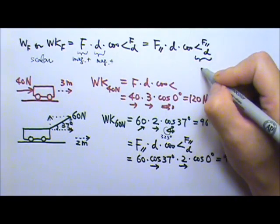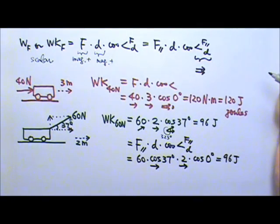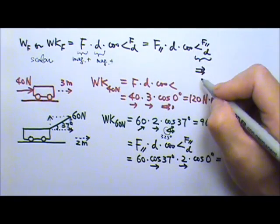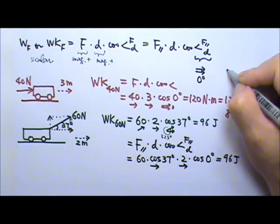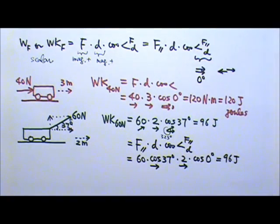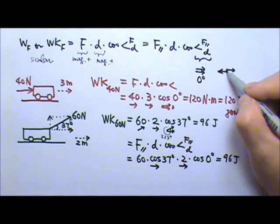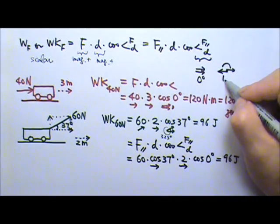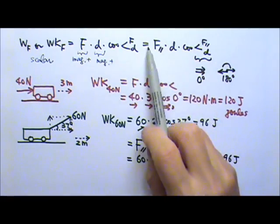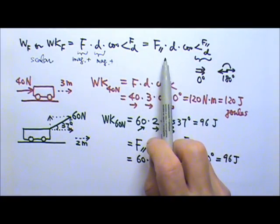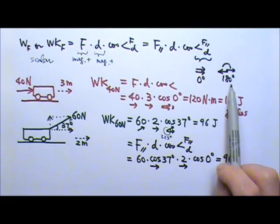You have two situations when using the parallel component method. One is when the displacement and the parallel component are in the same direction — the angle is 0 degrees. The other is when they are in opposite directions — the angle is 180 degrees. So if you use the parallel component to find work, the only possible angles are 0 degrees or 180 degrees.